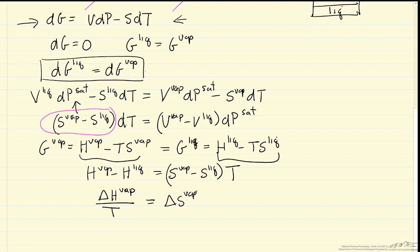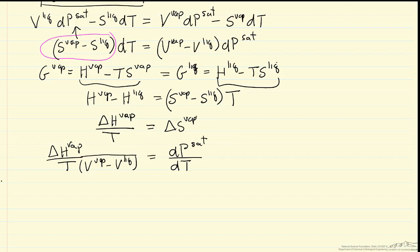So I made the substitution and also put the DT term on the right side and the volume of vapor and volume of liquid on the left side. And so this then is the Clapeyron equation.